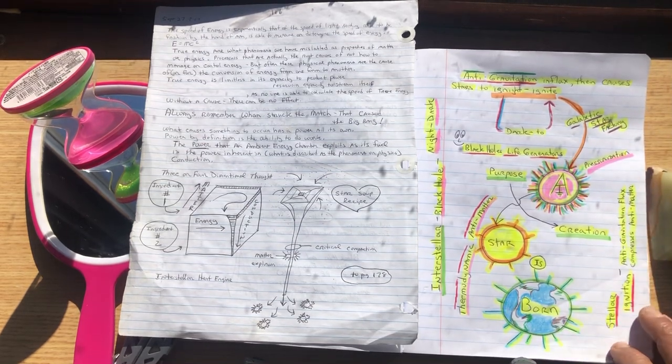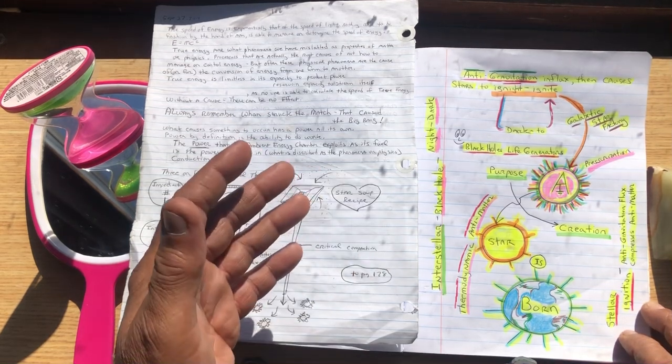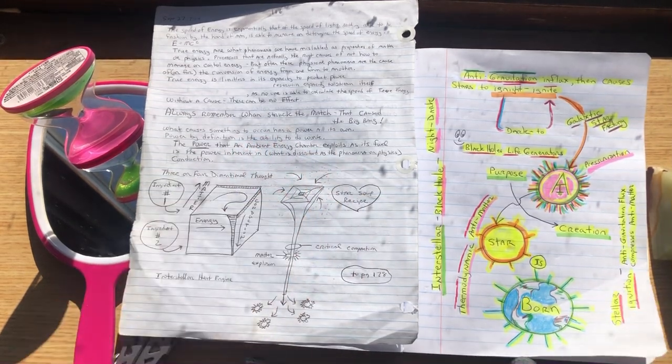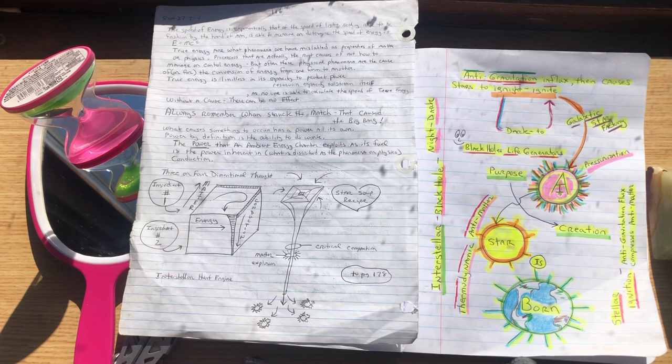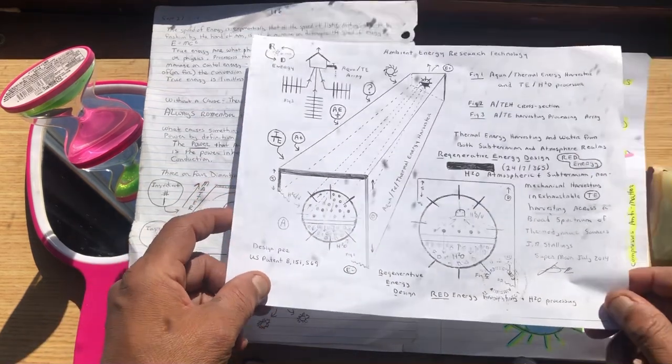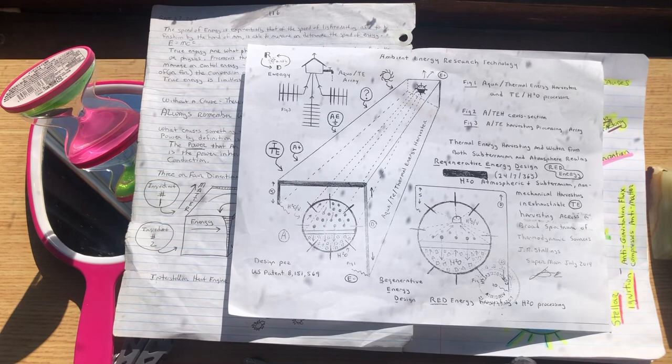If you take a look at gopher holes and termite mounds, they're able to air condition in the hottest deserts.